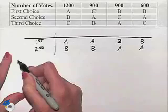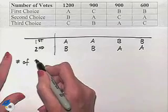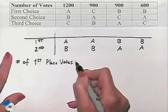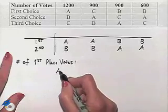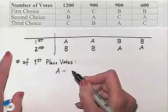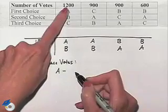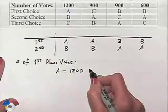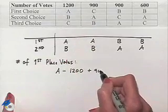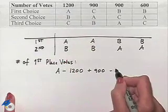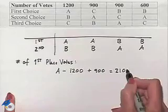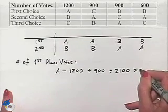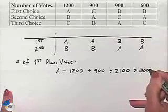So now, let's tally up the number of first place votes. Let's start with candidate A. Candidate A is going to have, from the first column, 1,200 votes. From the second column, 900 votes, giving candidate A a total of 2,100 votes. Now, we can actually stop here, as we note that 2,100 is greater than 1,800, and therefore is a majority.